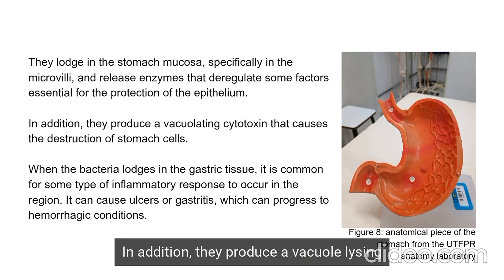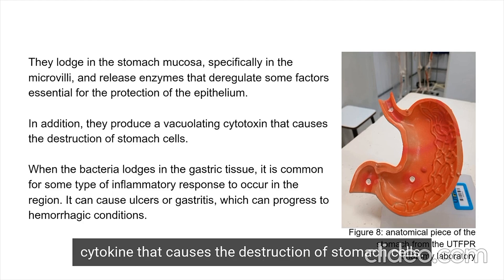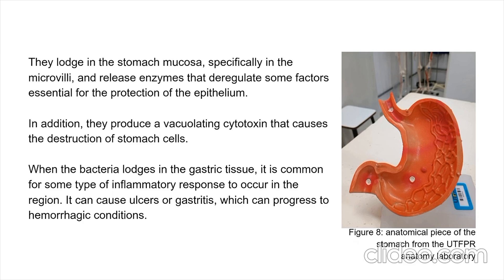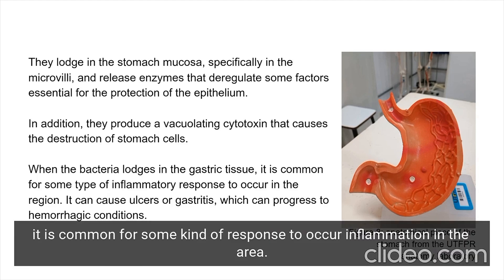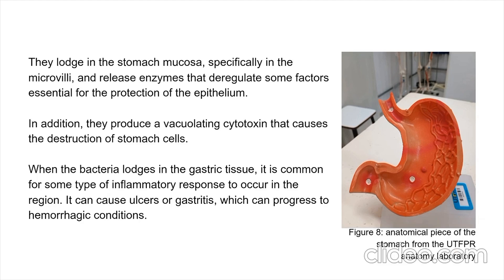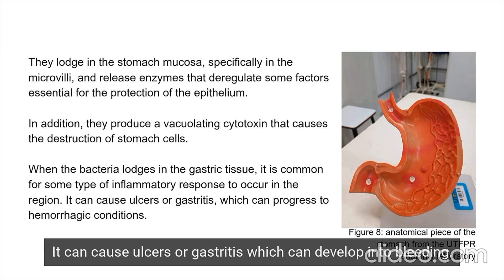In addition, they produce a vacuolizing cytokine that causes the destruction of stomach cells. When the bacteria lodge in the gastric tissue, it is common for some kind of inflammatory response to occur in the area. It can cause ulcers or gastritis, which can develop into bleeding.